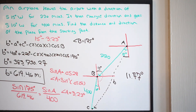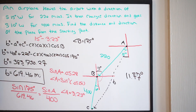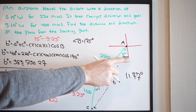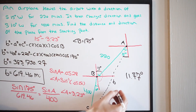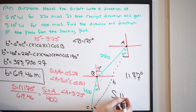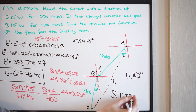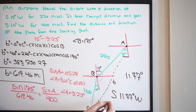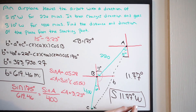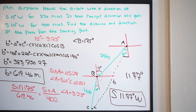Now we want to go ahead and put this on as a direction. We're going south to west, so the direction is south 11.77 degrees west. And that is our final answer.